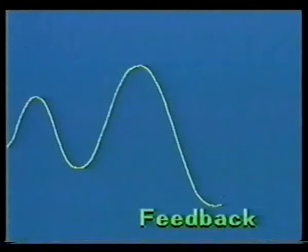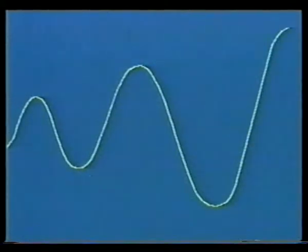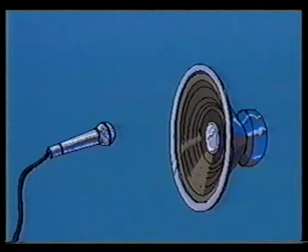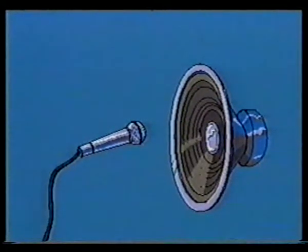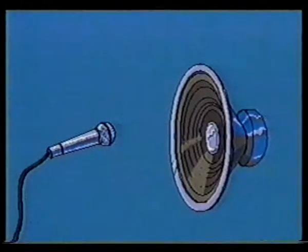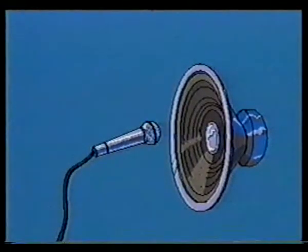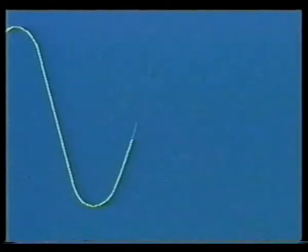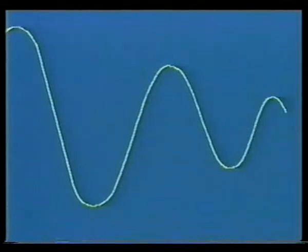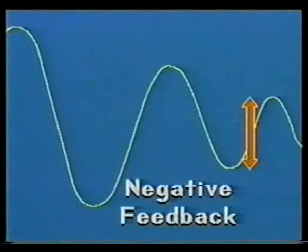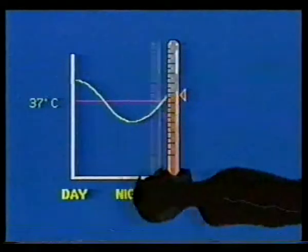Feedback converts a single response into a constant cycle of adjustment. Positive feedback increases the next response — it is produced when a microphone is brought close to a speaker, and the swings of the cycle increase, leading to instability. In living organisms, positive feedback results in death. Negative feedback is the normal survival technique of the organism. Through negative feedback, large swings in the temperature of an organism are quickly damped down to a minimum, producing the average steady state of homeostasis.